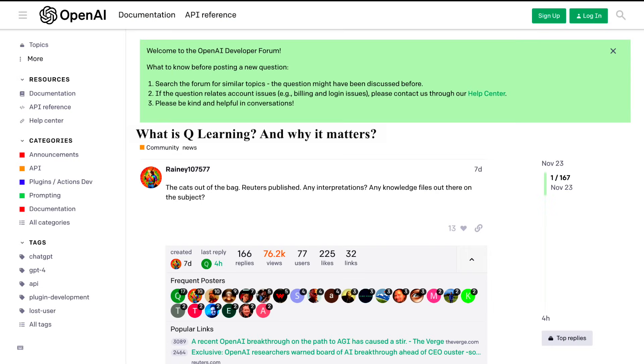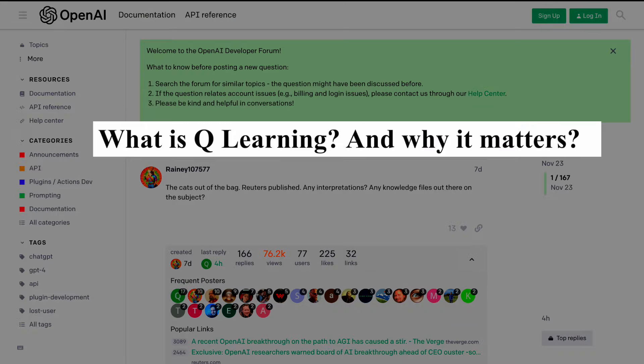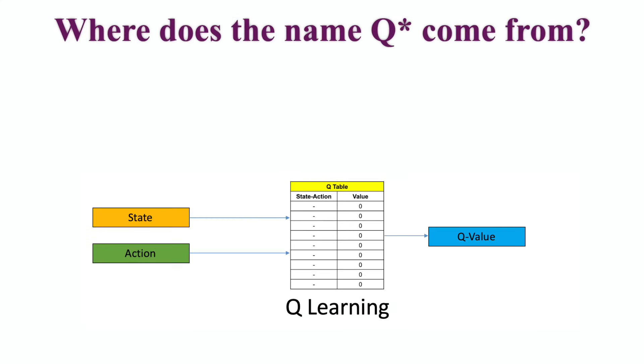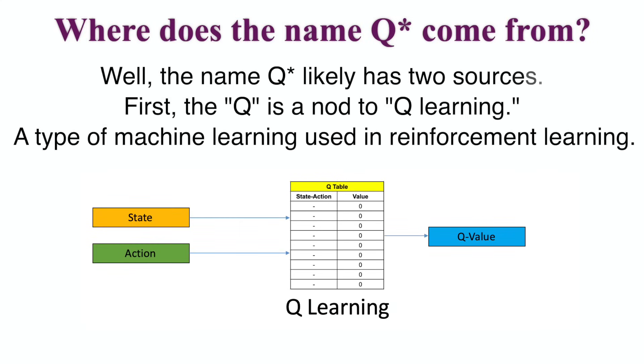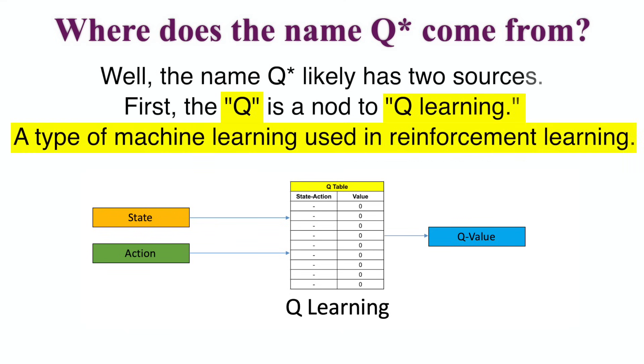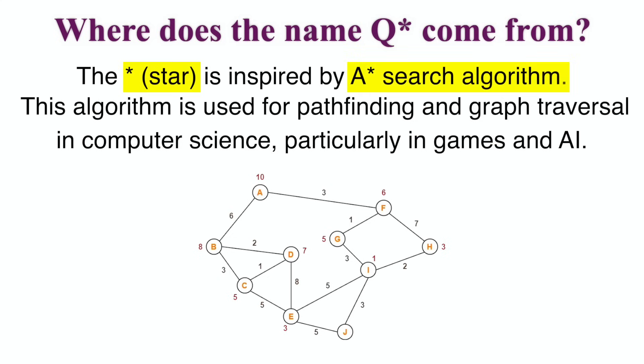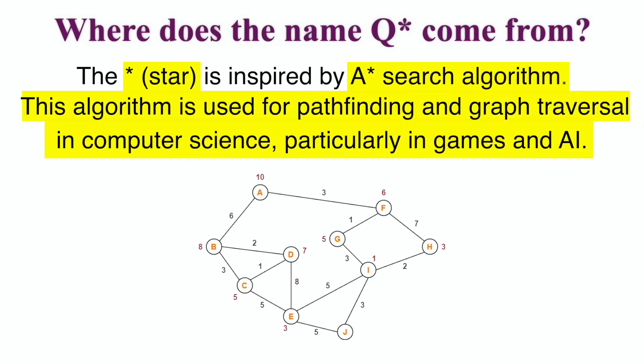Now let's get into the details about Q-learning and why it matters. You might be wondering, where does the name Q-star come from? Well, the name Q-star likely has two sources. The first — Q — is a nod to Q-learning, a type of machine learning used in reinforcement learning. The star is inspired by the A-star search algorithm, used for pathfinding and graph traversal in computer science, particularly in games and AI, to find the shortest path between two points.